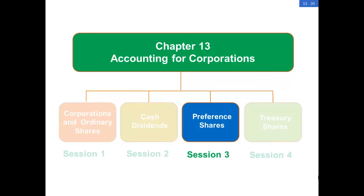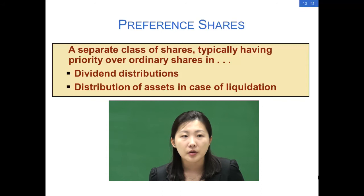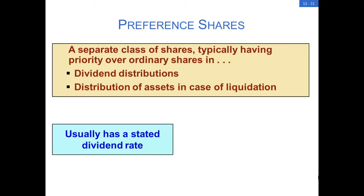In previous sessions, we talked about ordinary shares. Now we can discuss preference shares or preferred stock. Preference shares are a separate class of shares that typically has priority over ordinary shares in dividend distributions and in distribution of assets in case of liquidation. Preference shares usually have a stated dividend rate expressed as a percentage of their par value. They normally do not have voting rights.